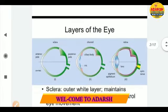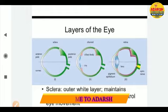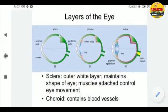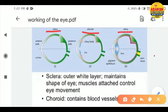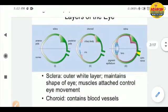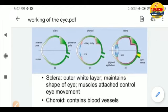Let's start with the layers of the eye. We have discussed the sclera and retina in the previous video. There are 3 layers of the eye: sclera, choroid and retina. The sclera is the outermost white layer that surrounds the eye. It protects the eyeball, maintains the shape of the eye, and has muscles attached to control eye movement.